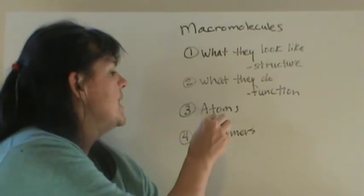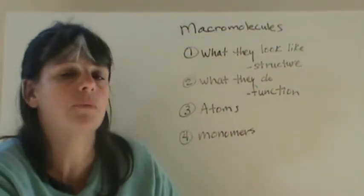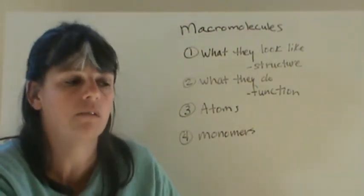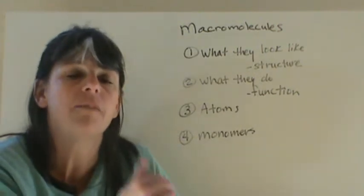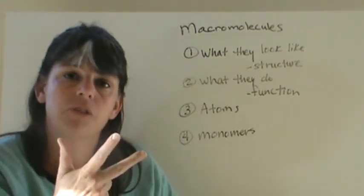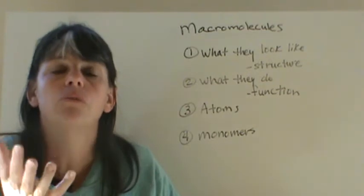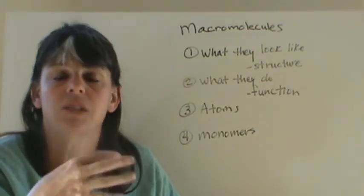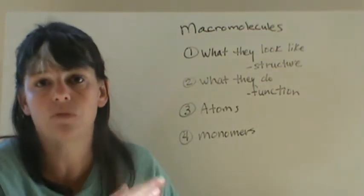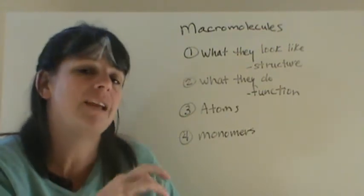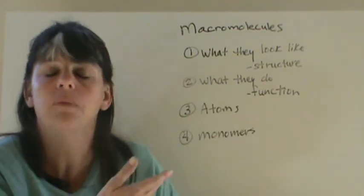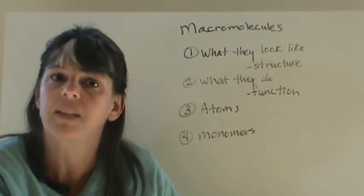The next one is atoms. So when we talked about carbohydrates and lipids, they're both made up of carbon, hydrogen, and oxygen. So those would be the three atoms, or the types of atoms, that make up those macromolecules. And so you're going to be doing the same type of thing today with nucleic acids. We'll take down which atoms make them up.